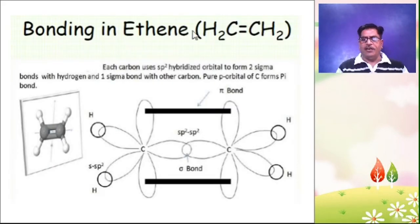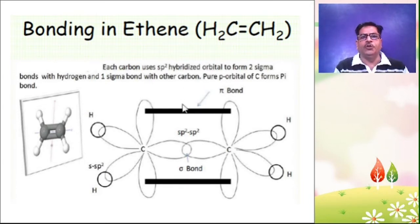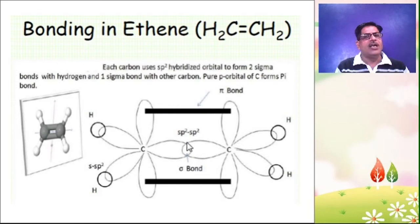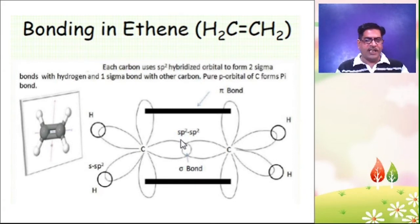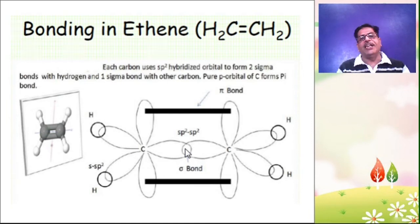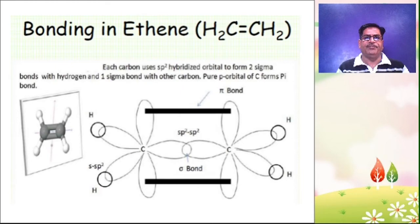Bonding in ethylene: each carbon uses SP2 hybridized orbitals to form two sigma bonds with hydrogen and one sigma bond with the other carbon. The pure P orbital on carbon forms a pi bond. Ethylene and acetylene are molecules which contain localized multiple bonds only between the pair of carbon atoms in each molecule. This is the example of ethylene in SP2 hybridization.